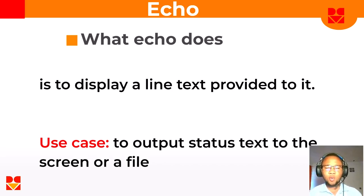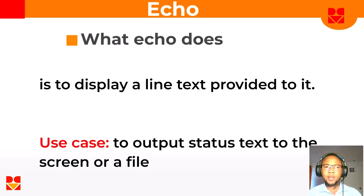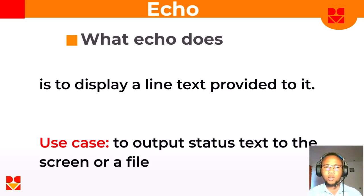The use case — when we would have to use it — is when we want to output the status of maybe a process to a screen or a file. We use echo mostly in our shell scripts to display the status of an ongoing process onto the screen or onto a file.